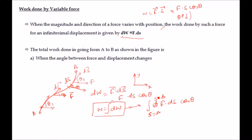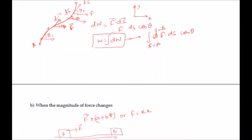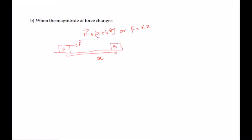The variable force category comes under two parts. First, when the angle between force and displacement changes, as shown in this figure where the particle moves along a curve. Second, when the magnitude of force changes — for example, if force equals a + bt, or if force equals kx, where force depends on displacement. In such cases we cannot directly use W = F·s.